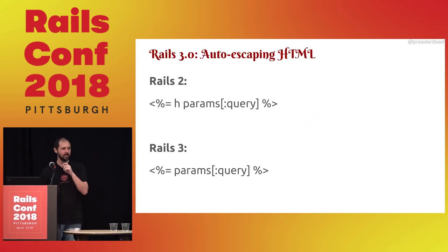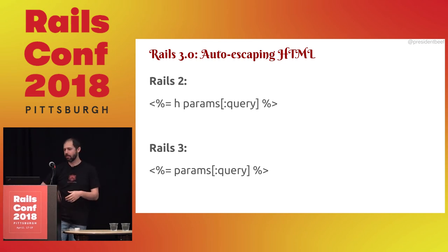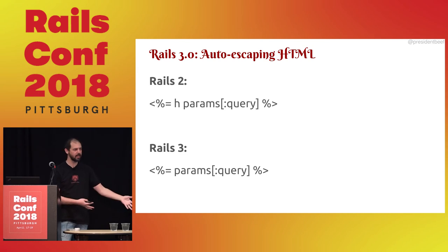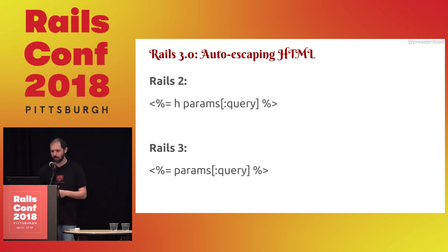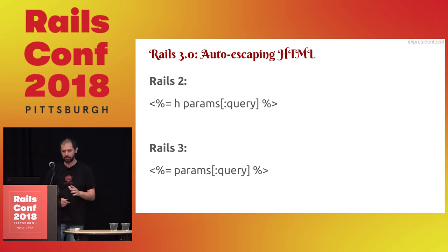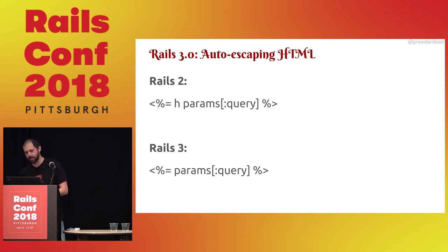What happened in Rails 3? We went from manually escaping things to automatically escaping things. It was a little painful for some people to do that upgrade, but overall it was an amazing security upgrade for Rails — really amazing. Now we kind of take it for granted, and that's awesome.